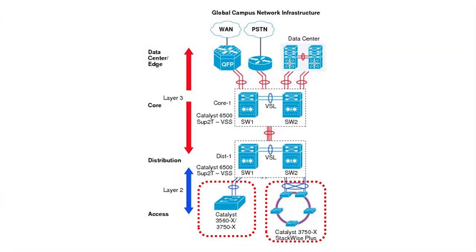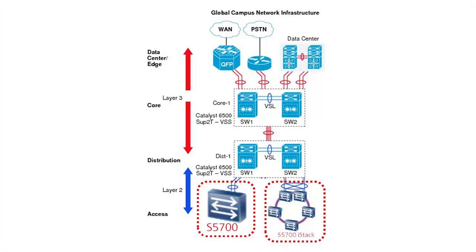The diagram also shows how the Cisco Catalyst would be positioned in the network topology, and you can see that the 3750 product is the equivalent for Huawei at the access layer. The S5700 can be used as a direct connection switch or using iStack technology in a ring deployment.